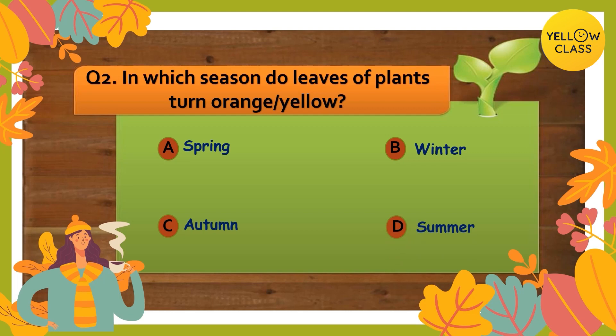In which season do leaves of plants turn orange or yellow? A spring, B winter, C autumn, or D summer. You have enough time — quickly think and give me the right answer. 10 seconds to go, you can do it! And your time is up — let's find out who got it right.